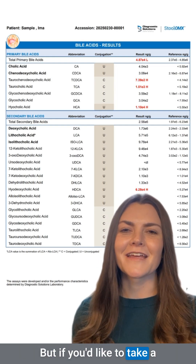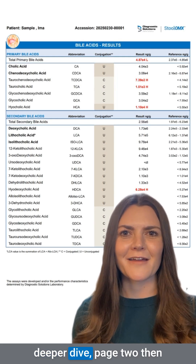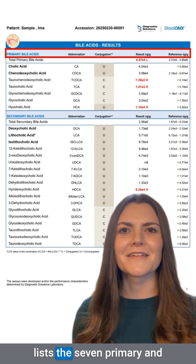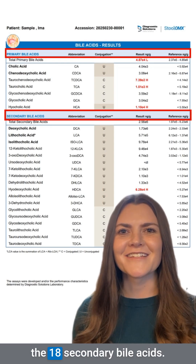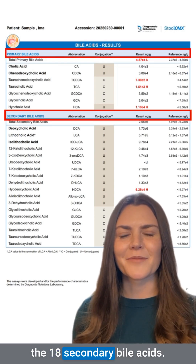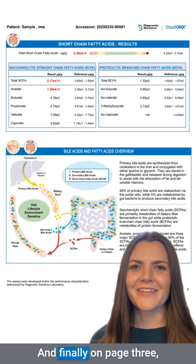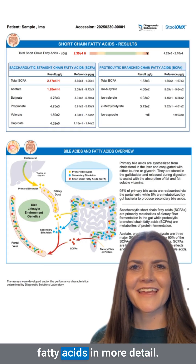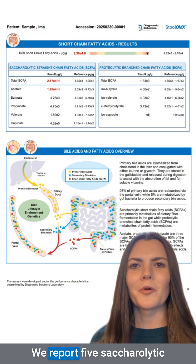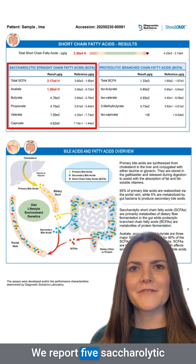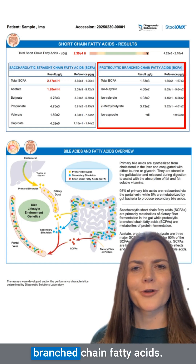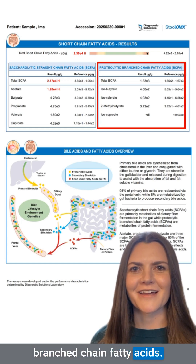But if you'd like to take a deeper dive, page 2 then lists the 7 primary and the 18 secondary bile acids. And finally, on page 3, we look at short-chain fatty acids in more detail. We report five sacrolytic straight-chain fatty acids and four proteolytic branch-chain fatty acids.